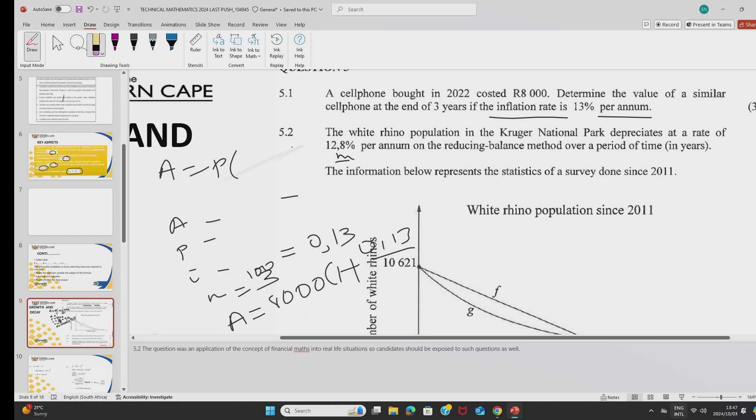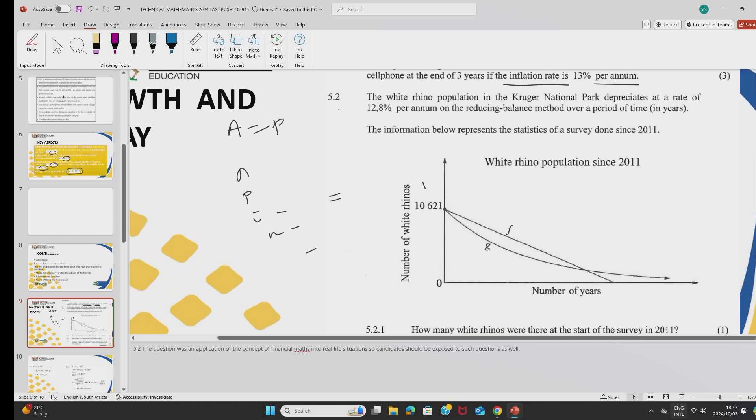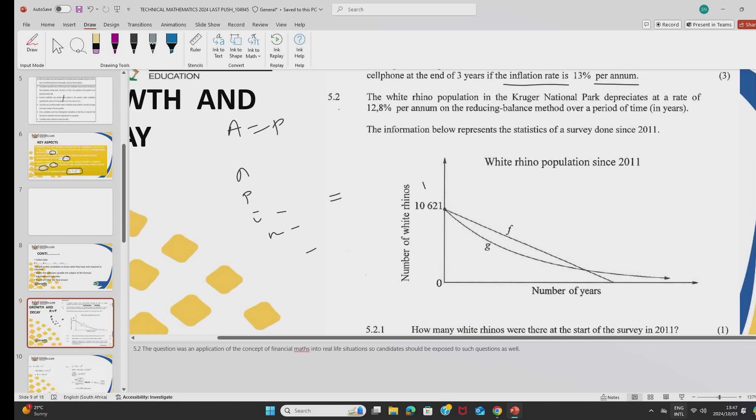Then also as well, the graphical interpretation. Financial mathematics can be applied to real life situations. It is not limited to money. For instance, in this question here, I'll just give you a brief overview of what is going on here. In this question, we are told about the population of rhinos that are depreciating over years in the Kruger National Park.